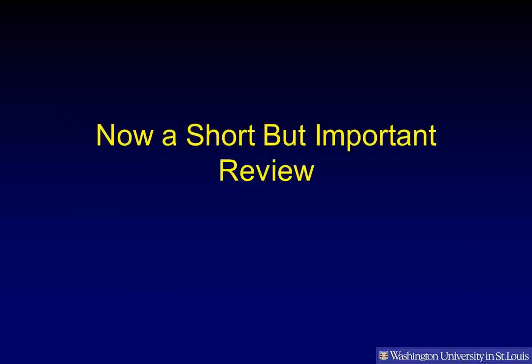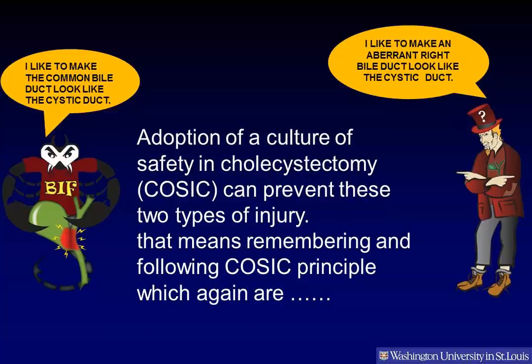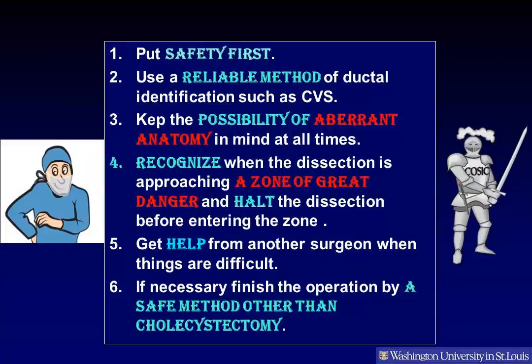For a short but important review: biliary inflammatory fusion and aberrant right ducts are the principal causes of biliary injury. Elimination of injury due to these causes should reduce biliary injury to a very low level. Adoption of a culture of safety in cholecystectomy — COSSACK — can prevent these two types of injuries. The COSSACK principles are: putting safety first, using a reliable method of ductal identification, keeping the possibility of aberrant anatomy in mind at all times, recognizing when the dissection is approaching a zone of great danger and halting it before entering that zone, getting help from another surgeon when things are difficult, and if necessary, finishing the operation by a safe method other than cholecystectomy.